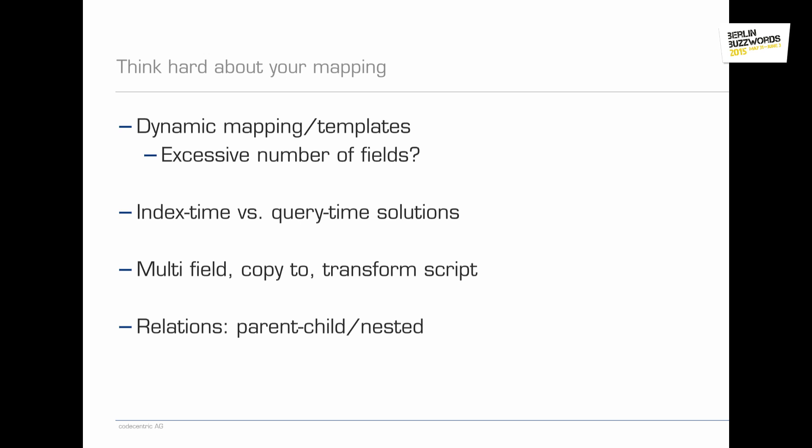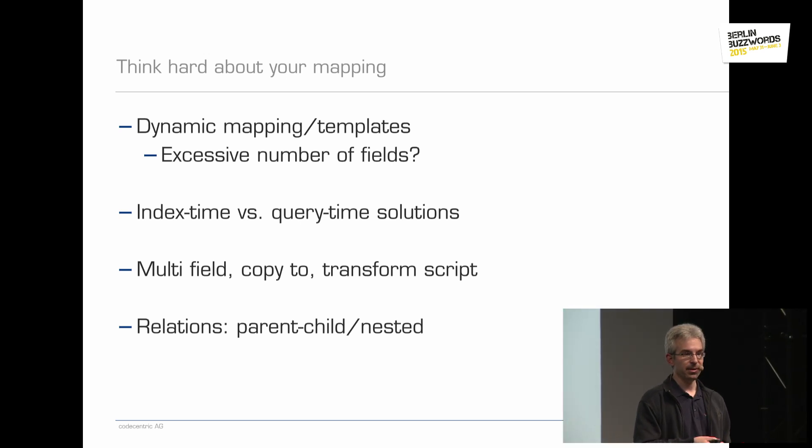Index time versus query time solutions is also a very important topic. You can solve some problems at query time — for example, prefix queries have query capabilities for that. You can also solve them at index time: you can choose edge n-grams to generate tokens and save time during queries. You can solve some things at query time with scripts, or index a field twice to generate a sortable representation without needing a script in every query. I've concluded it's better to address things at index time, but then you need to know it already when you create your mapping — that's the challenge.